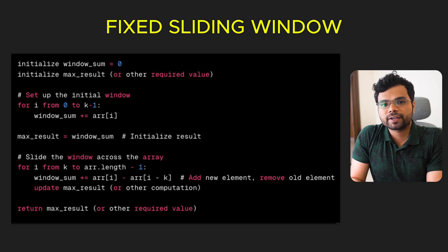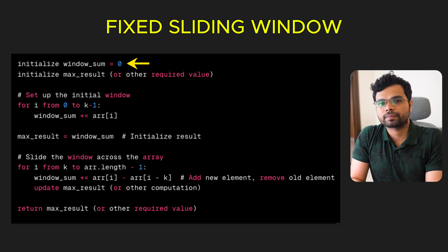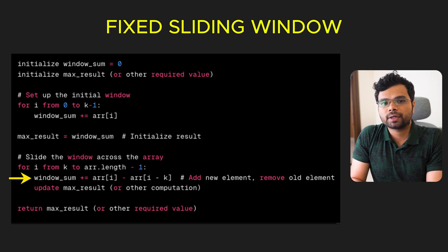Here is a generic template to solve fixed sliding window-related problems for a window of size k. Initialize variables to track the result and window state such as sum, counter, frequency. Setup the initial window by processing the first k elements. Slide the window across the remaining elements by adding the new element and removing the old element that moves out of the window. Update the result accordingly.